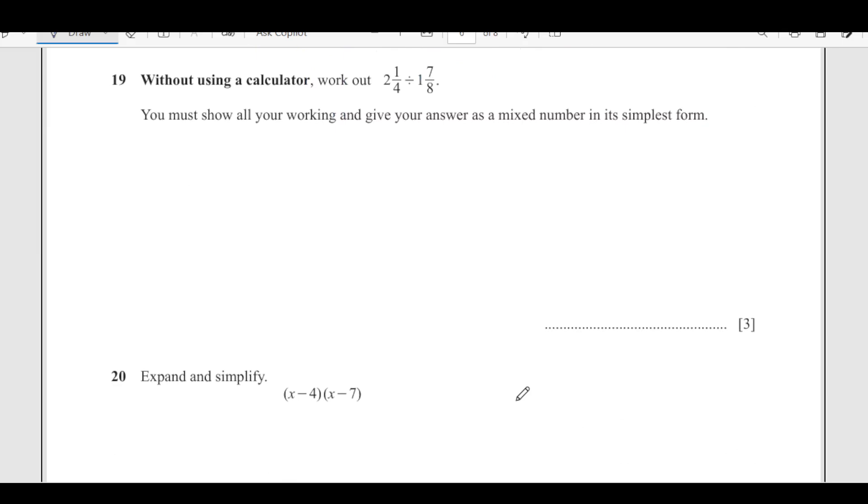Number 19: Without using a calculator, work out 2 1/4 divided by 1 7/8. When you break this down, 4 times 2 is 8 plus 1 is 9, so 9/4 divided by 8 times 1 is 8 plus 7 is 15, so 15/8. This becomes 9/4 times 8/15. Simplifying: 4 times 2, 3 times 3, and 3 times 5 gives us 6/5, which is 1 1/5.